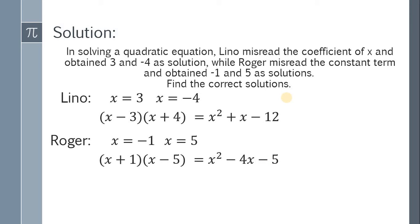Since Lino misread the coefficient of x, the first term and the last term are correct. Roger misread the constant term, so the first term and the second term are correct. Therefore, the correct quadratic equation must be x squared minus 4x minus 12.